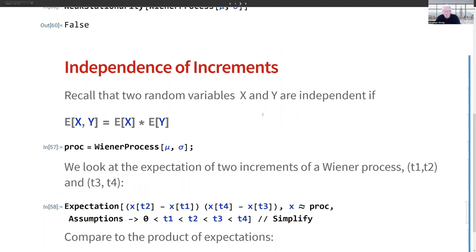Recall that two random variables X and Y are independent if the expectation of X and Y is equal to the expectation of X times the expectation of Y. Let's see if that holds in the case of the Wiener process.